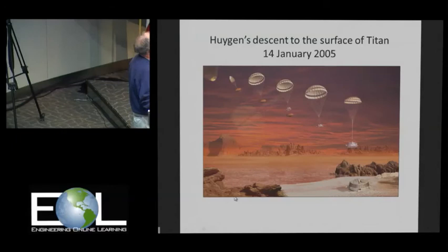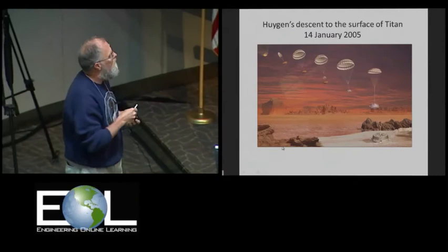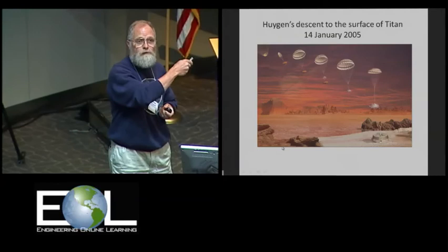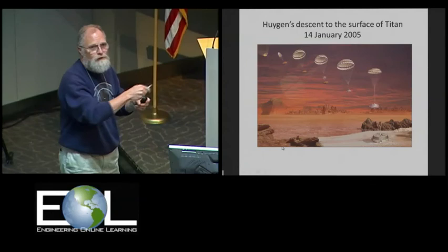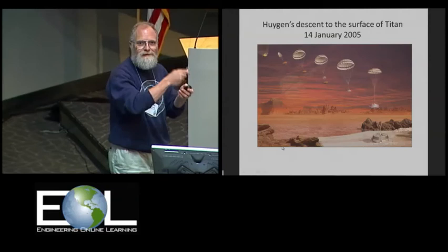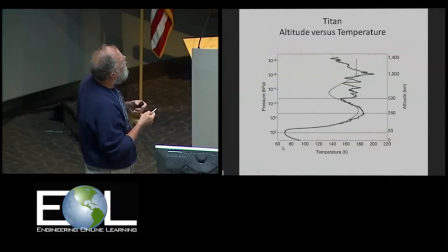Then on the 14th of January of 2005, the Huygens spacecraft descended to the surface of Titan. And there's also some nice parachute physics that's going on here. Paul is going to talk about parachutes a little bit tomorrow. This is a parachute in another atmosphere. So we can relate our balloon descents to what's going on studying other bodies in the solar system.